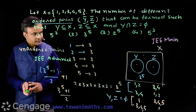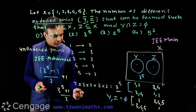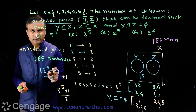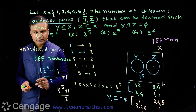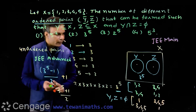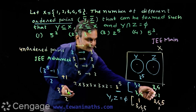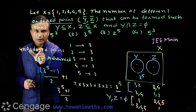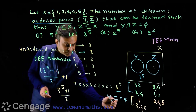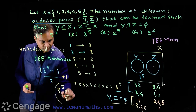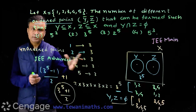So to summarize: in ordered pairs, the two cases of swapping elements between Y and Z are different. In unordered pairs, those two cases are the same, so we divide by 2. The empty set case is handled separately by subtracting it first, then adding it back, giving (3⁵ + 1)/2 for unordered pairs. These words — ordered versus unordered — are very important, and getting them wrong will give you the wrong answer.